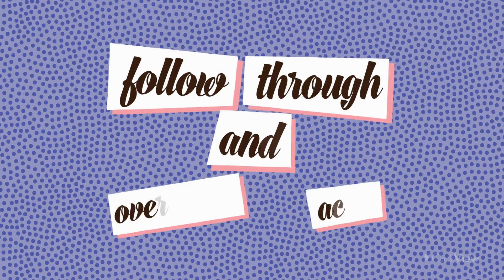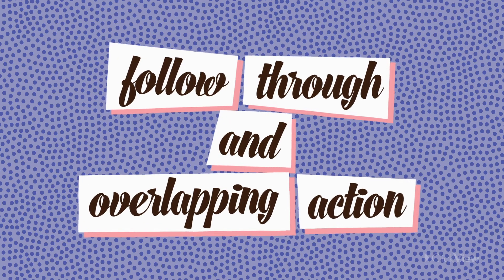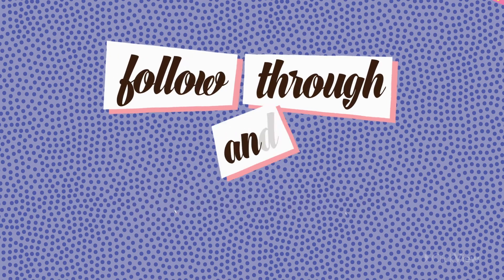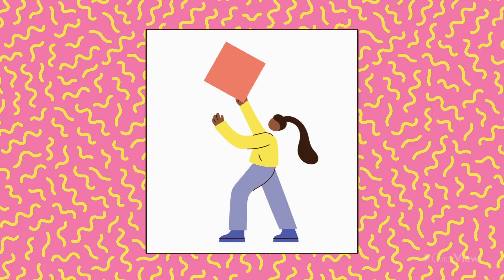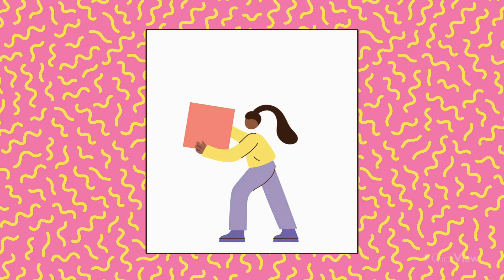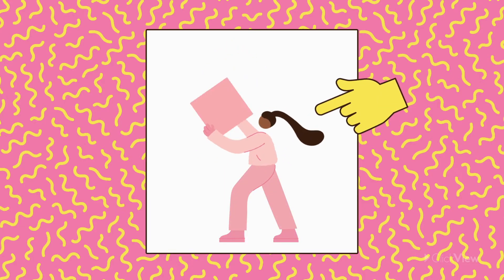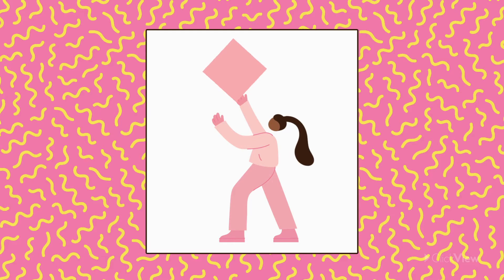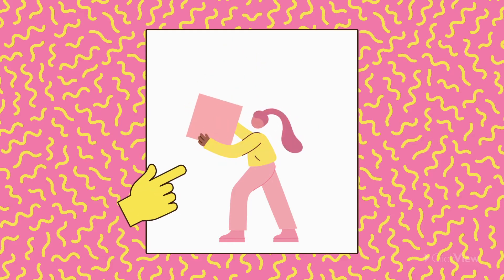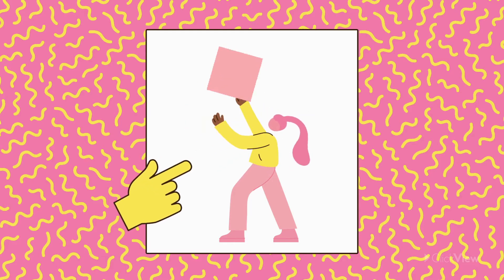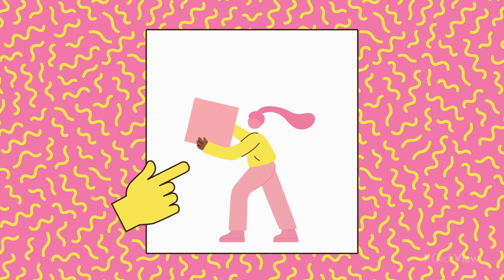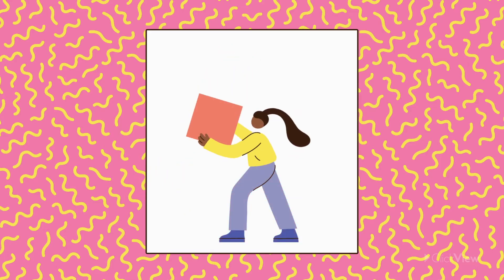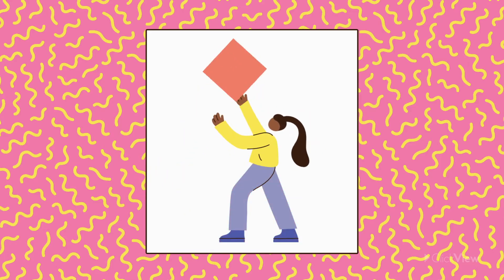Follow through and overlapping action. This principle happens when parts of a character's body or object keep moving after the leading part stops. This technique adds realism to animations and follows the rule of inertia.